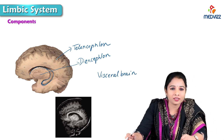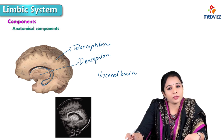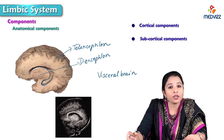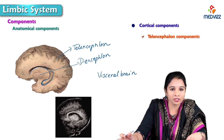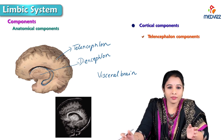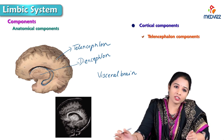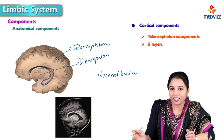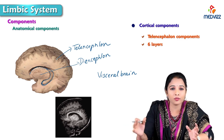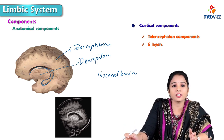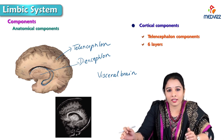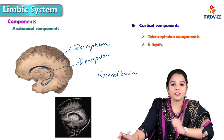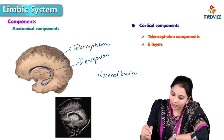Let's see the components of the limbic system. Anatomically, the limbic system has cortical and subcortical components. The cortical components are telencephalon components — the limbic system is an ancient cortex, an archicortex. The cortex usually has six layers; 90% of the brain is made up of neocortex where the cortex consists of six layers. In the archicortex, the cells are arranged in only three layers.